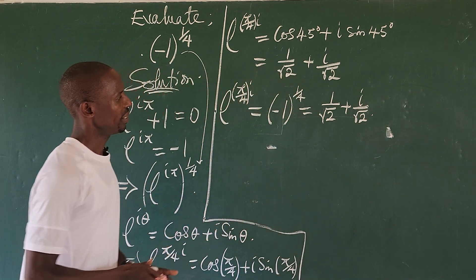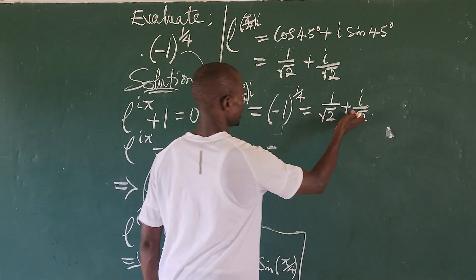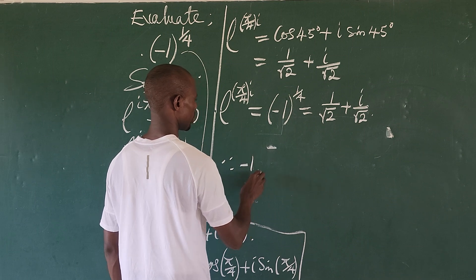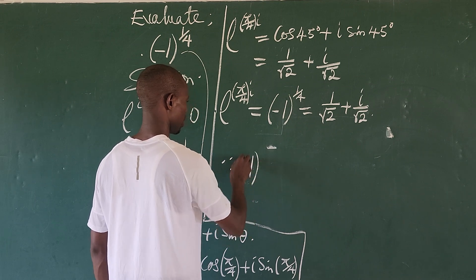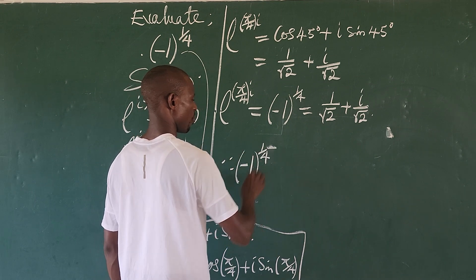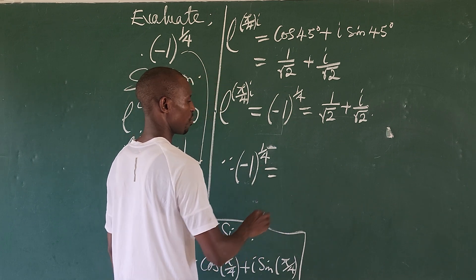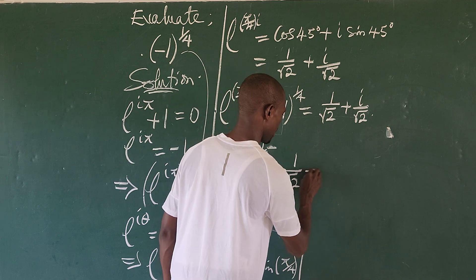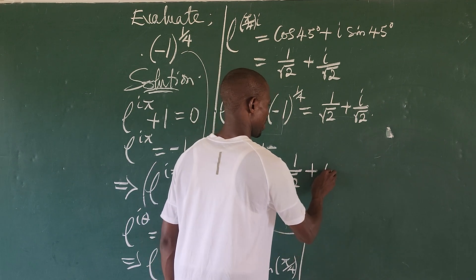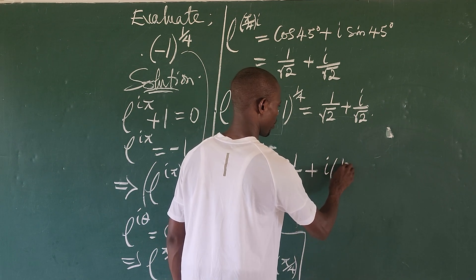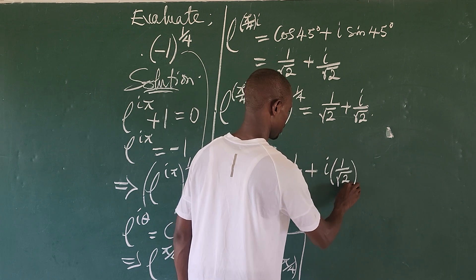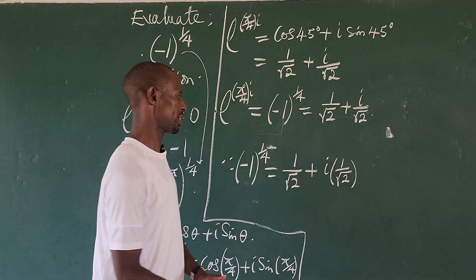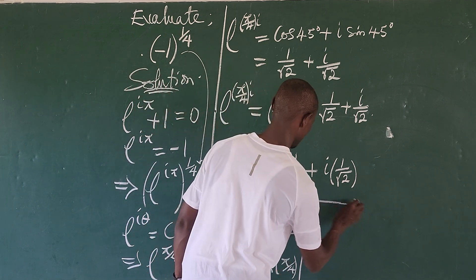Therefore, rewriting the final expression: (−1)^(1/4) equals 1 over √2 plus i times 1 over √2. You can rationalize this, or you can equally leave your answer in this format.